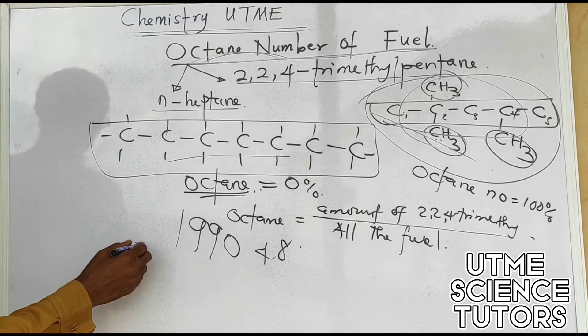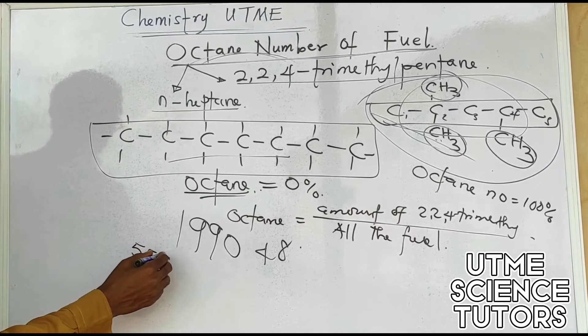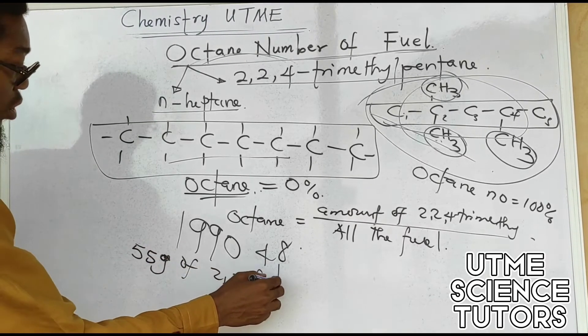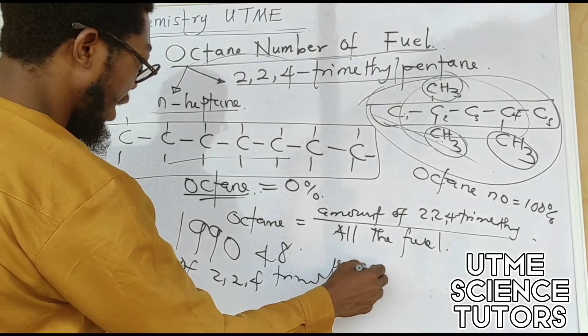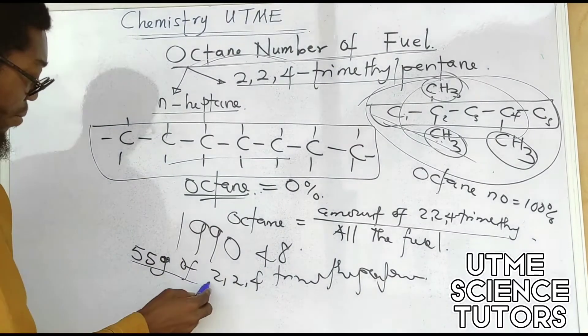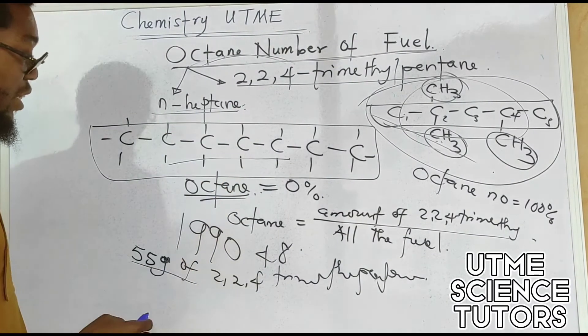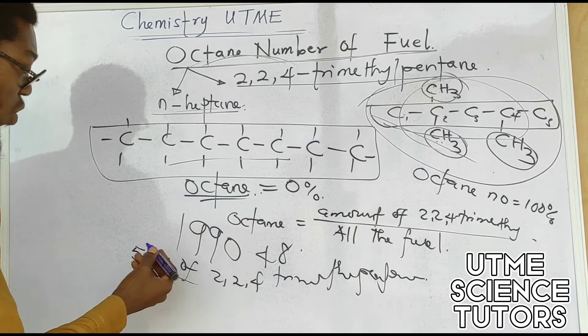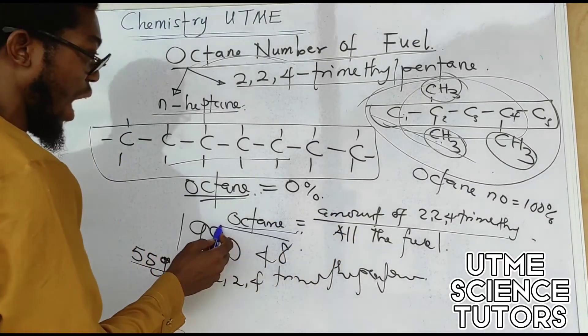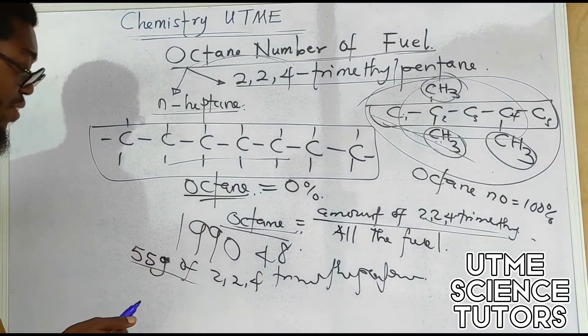So according to this question, we are going to say the octane number will be given as the amount of the 2,2,4-trimethylpentane, which is 55 grams.